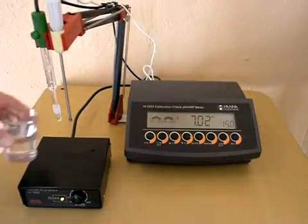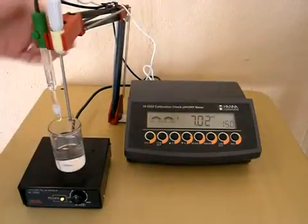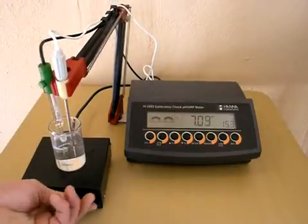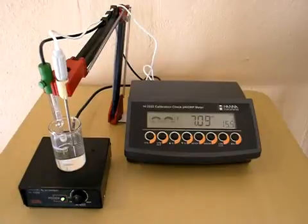We're going to give the probe a quick rinse with some deionized water. I'm going to place pH buffer 7.01 on the stirrer. The stirrer bar is in place and turn it on. Let the probe start to condition itself.